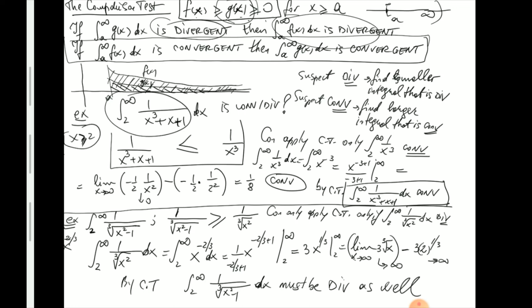At this point students often ask: how do I guess convergence or divergence so I pick the inequality in the right direction? There is no simple universal answer. When dealing with rational fractions, the dominant power typically tells you ahead of time whether it converges or diverges, and you confirm it by comparing with the function involving the leading coefficient since that's easier to integrate. The important thing is to understand how the test works so we can use it later with infinite series. That concludes the topic on improper integrals, though we'll see them again in the context of series.